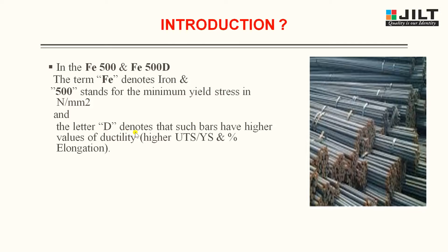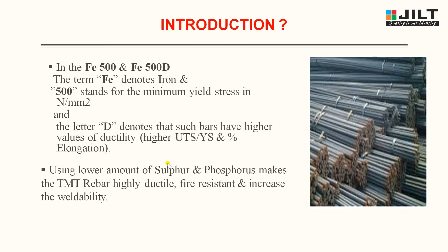The letter D denotes that such bars have higher values of ductility — that is, higher UTS (ultimate tensile strength), yield strength, and percentage elongation. Using lower amounts of sulfur and phosphorus makes the TMT bar highly ductile, supply resistant, and increases its weldability.